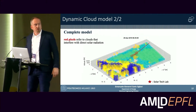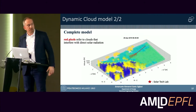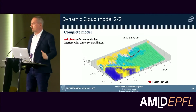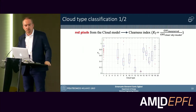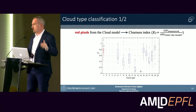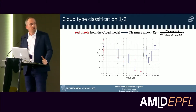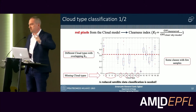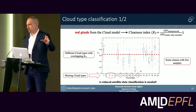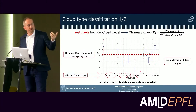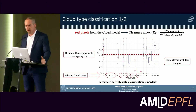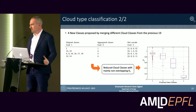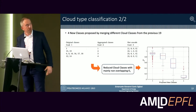The dynamic cloud model highlights in red those pixels affecting the direct solar beam. We coupled this with the clearness index, which is the ratio of measured global horizontal irradiance to clear-sky irradiance. Looking at the box plots, we were not able to directly associate a given cloud typology class with the clearness index. Additionally, some classes were missing in the recorded days, so we were forced to reduce the original 19 classes down to four reduced classes.